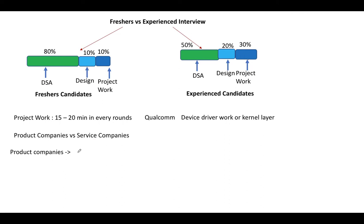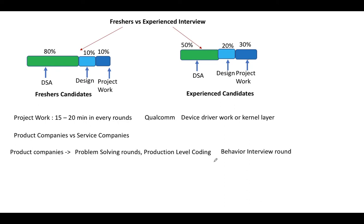Private or product companies generally check your logical thinking and coding skills by asking data structures and algorithm questions. They generally don't care whether your communication skill is perfect or not, and they don't typically have a group discussion round to test communication. They give complex problems and expect you to come up with production-quality code, and they assess how you explain your approach. They also check behavioral skills during a behavioral round — testing whether you are a good team player or prefer an individual contributor role.